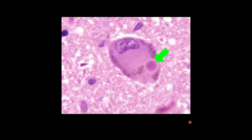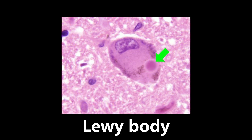Continuing with histology, with another arrow sign, we see a very well-defined circular structure within a cell — this is an example of a Lewy body. This is an eosinophilic cytoplasmic inclusion within neurons, and we can see this in Parkinson's disease as well as Lewy body dementia. If you see this image in an elderly patient — a somewhat darkened, circular-appearing structure within a cell — think Lewy body, Parkinson's disease, or Lewy body dementia.